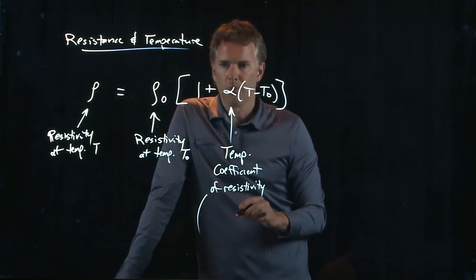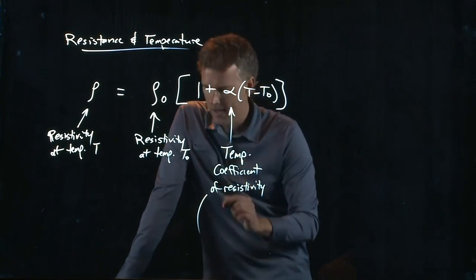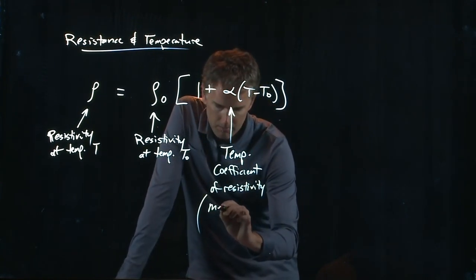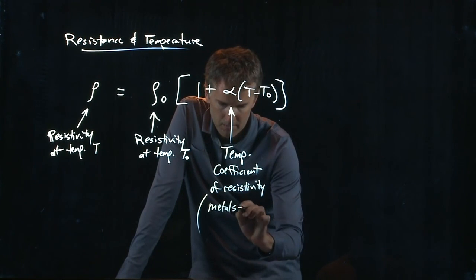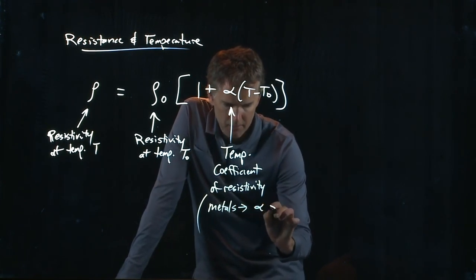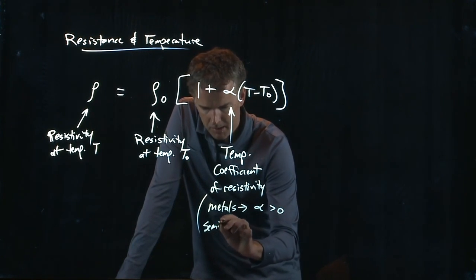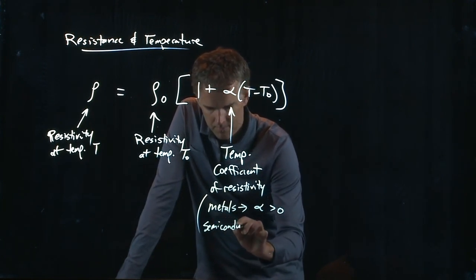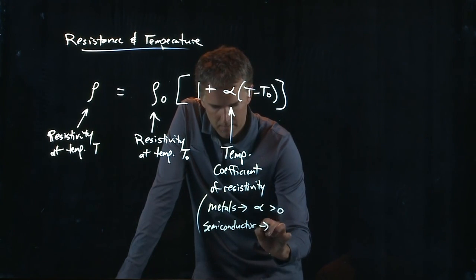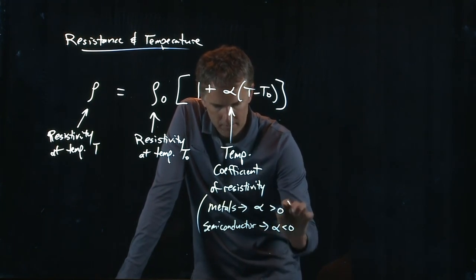This thing is rather critical to how the resistor behaves. And if it's a metal, then alpha is a positive number. But if it is a semiconductor, then alpha is a negative number.